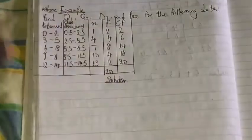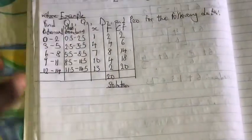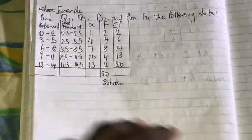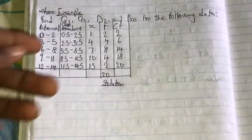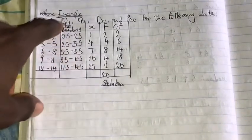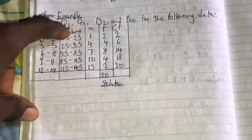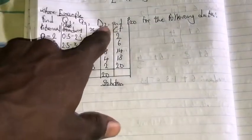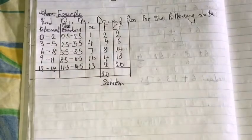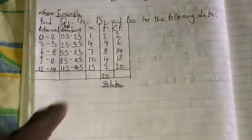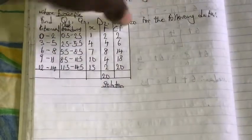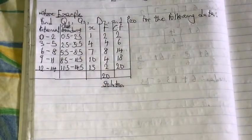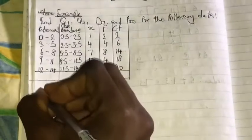Here is the question that I have for you guys today. We are going to look for Q1, that is the first lower quartile, the upper quartile Q3, the deciles, and the percentiles for the following data. Deciles and the 20th percentile. Starting from the first one, which is Q1.